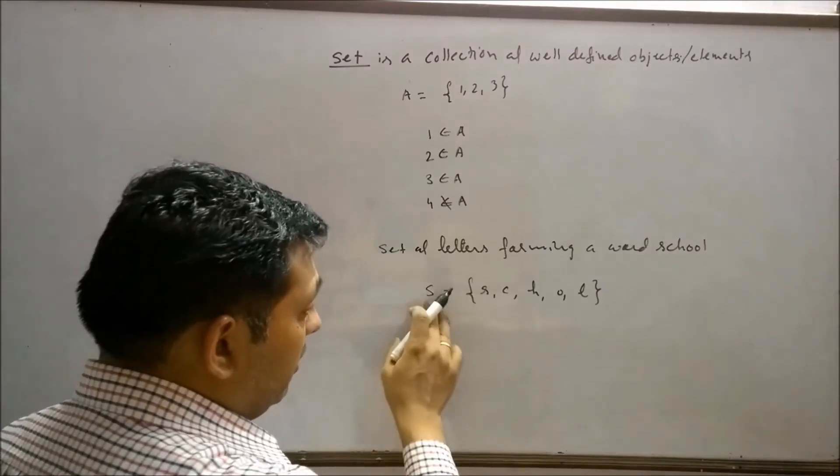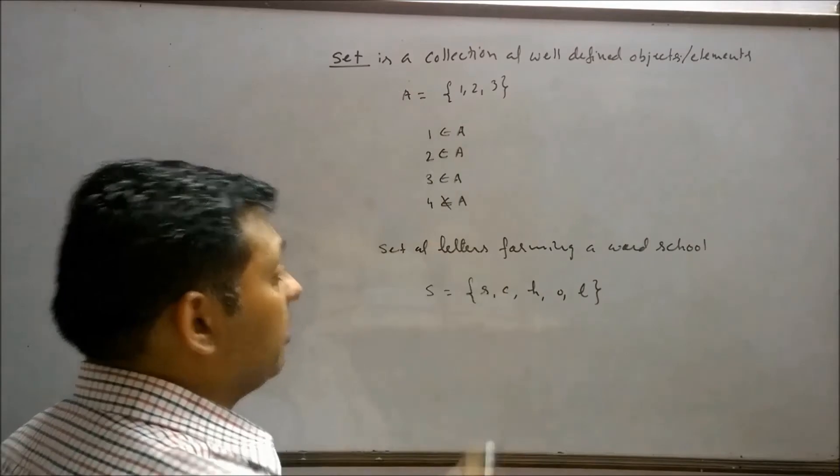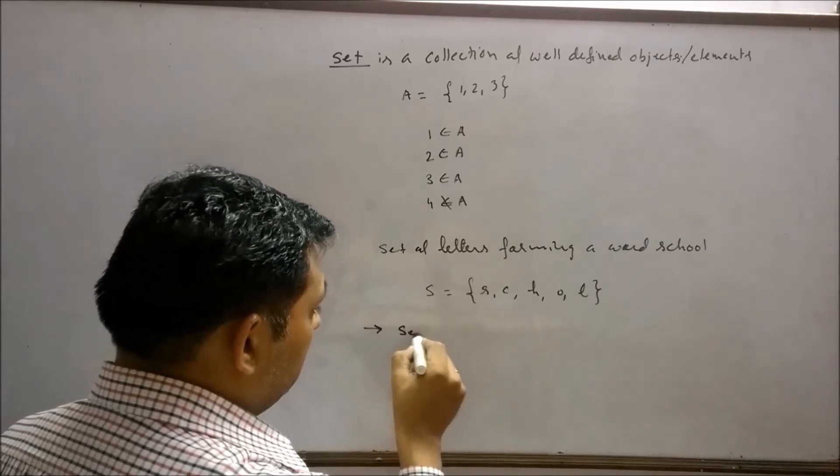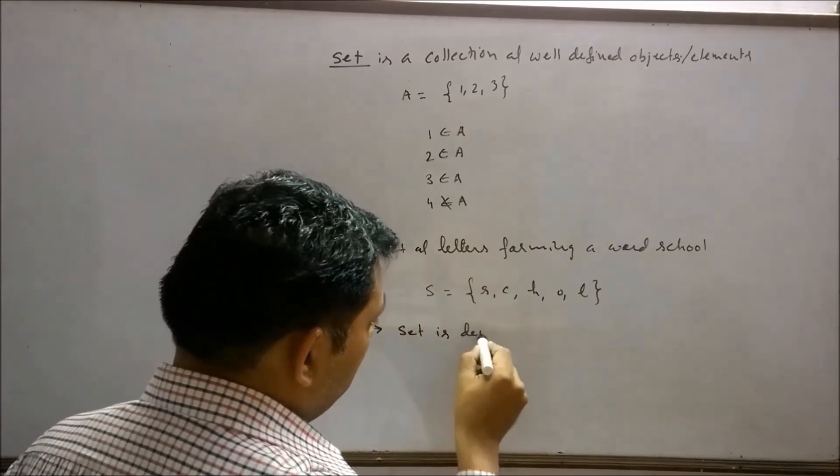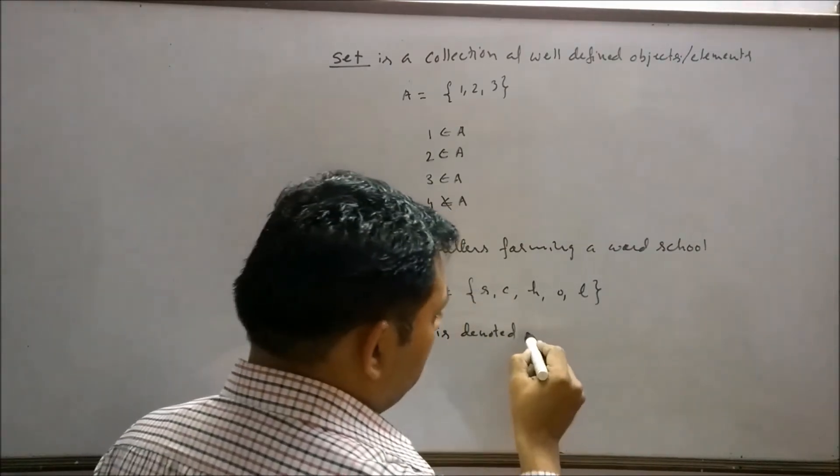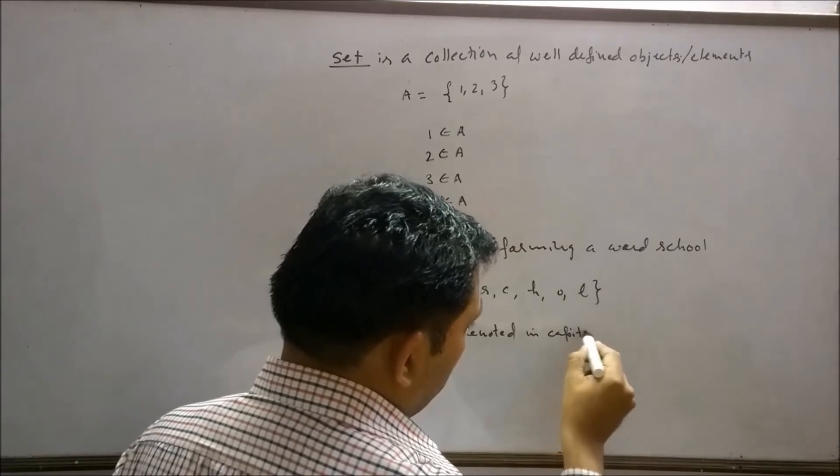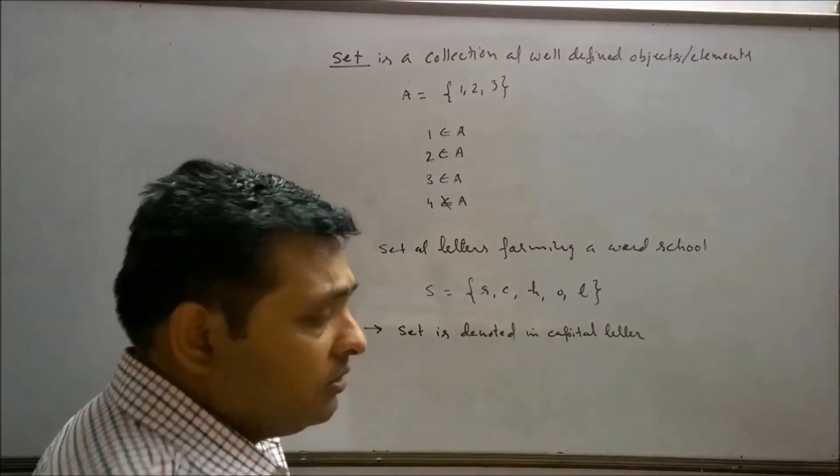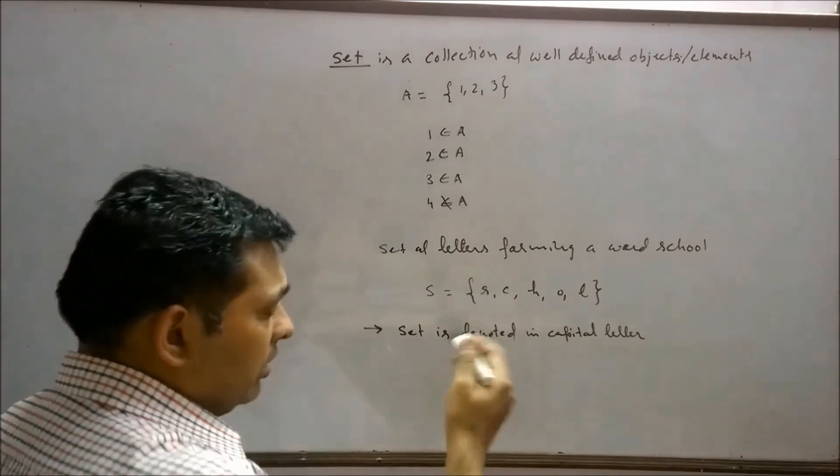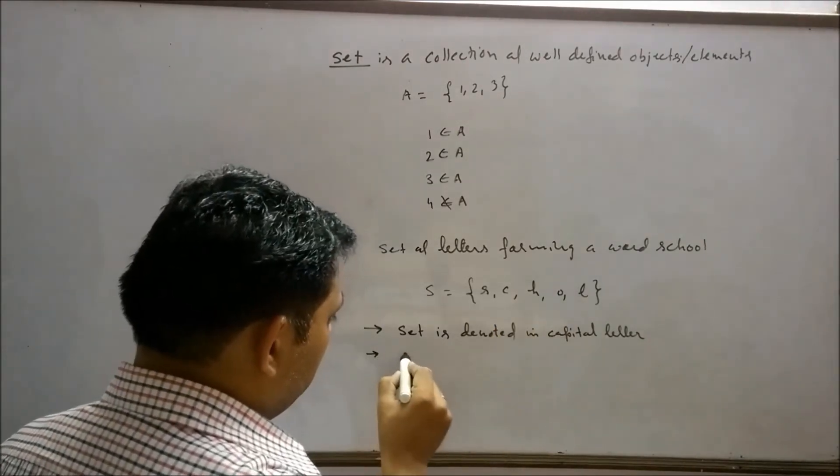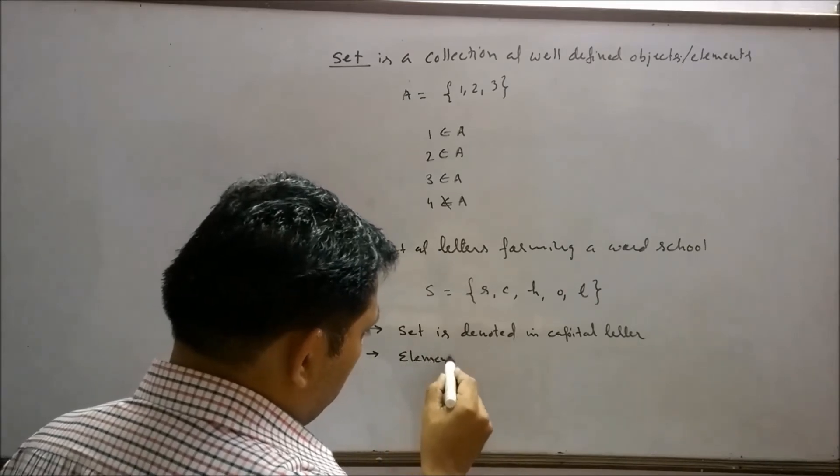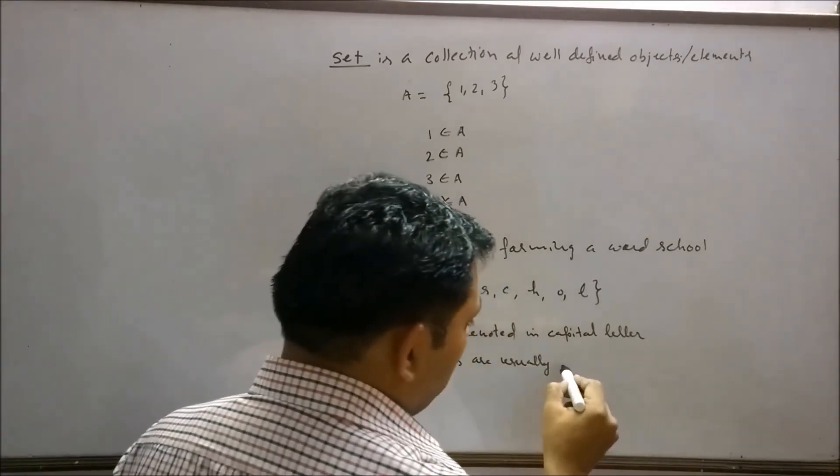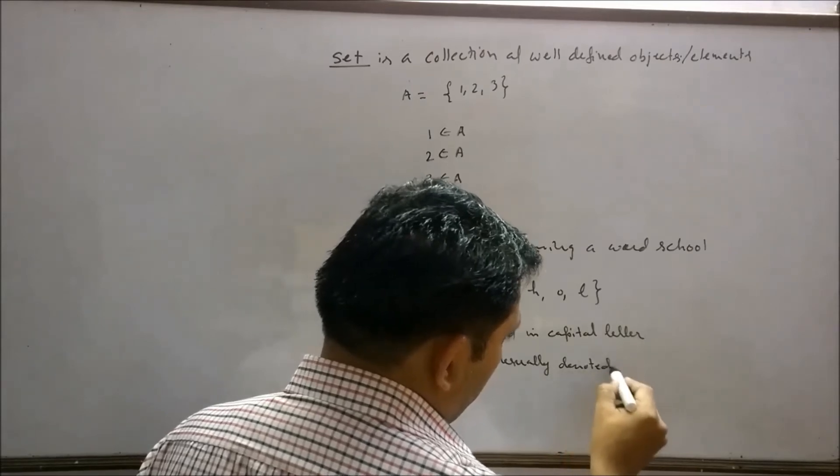Important thing is to be noted here. I have written S in capital letter, A in capital letter, which indicates the set. Sets are denoted in capital letters. Elements generally are represented in small letters. Elements are usually denoted in small letters.